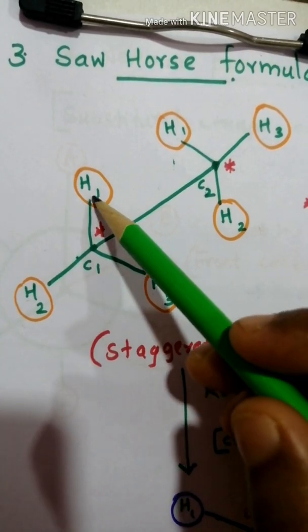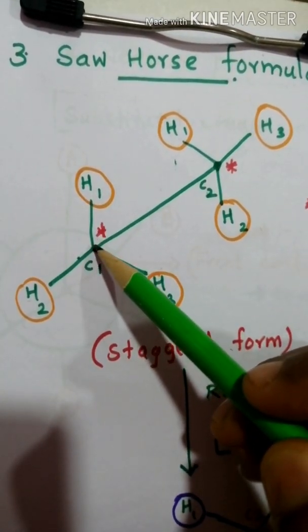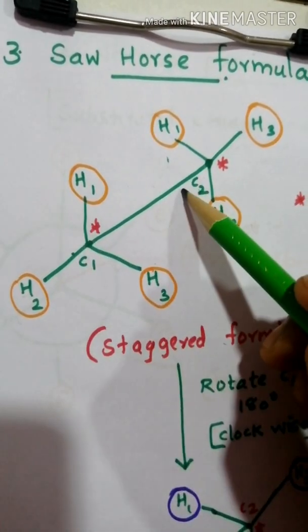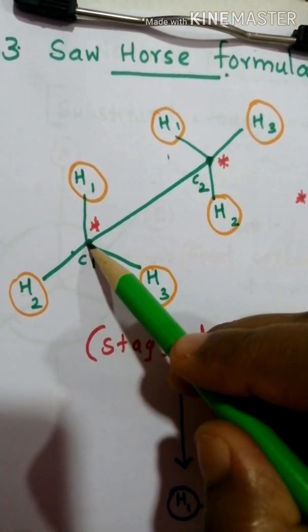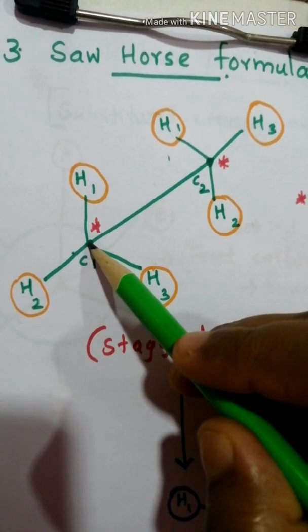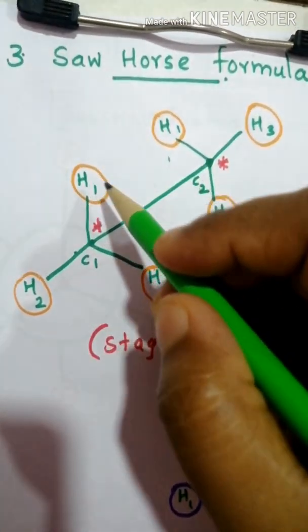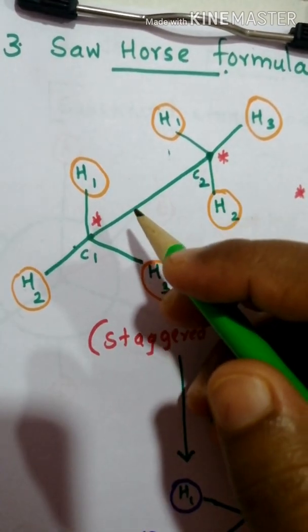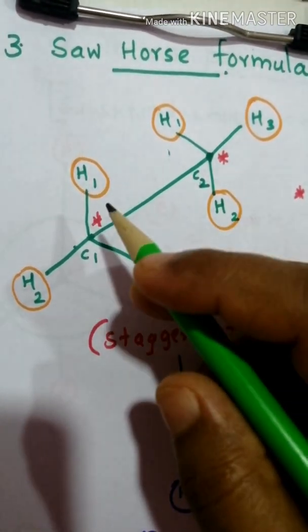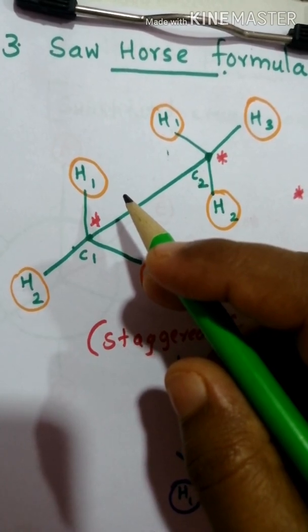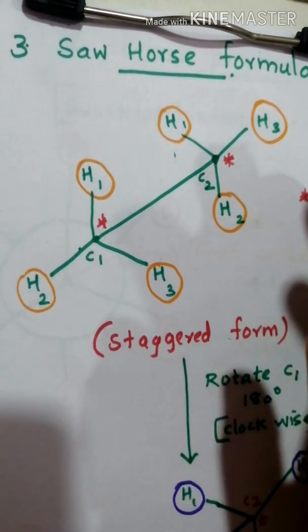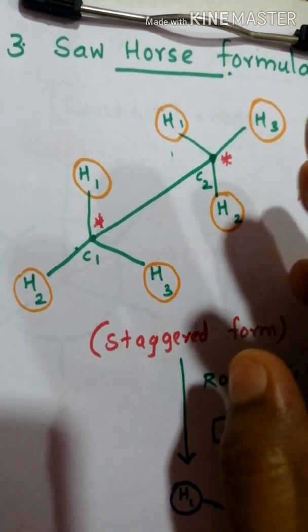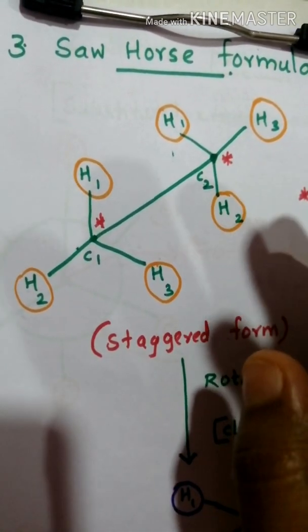In this figure we can see there are two asymmetric centers C1 and C2. This is possible in case of substituted ethane only, we cannot consider the methane condition previously discussed. In case of wedge and Fisher, substituted ethane is the only possible way, so we can represent a molecule like substituted ethane.